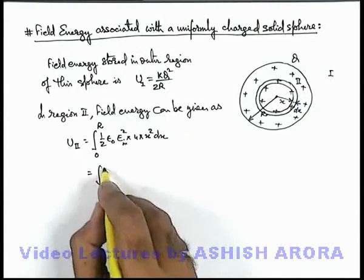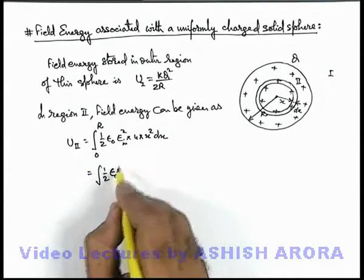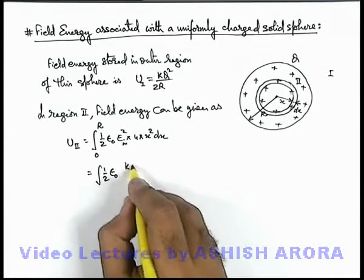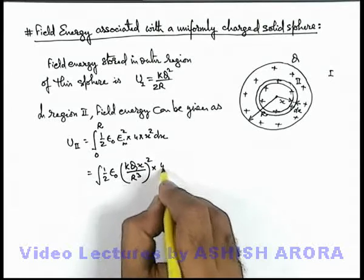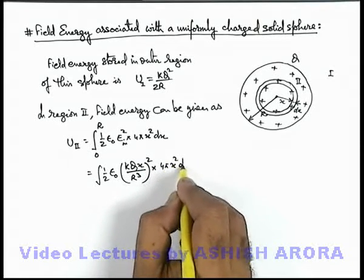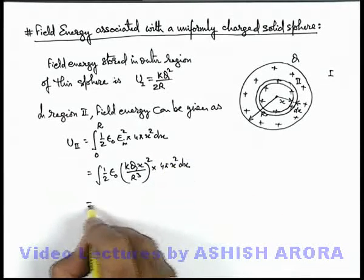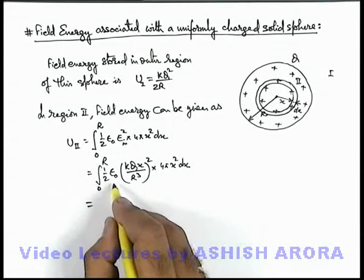If we substitute the values it will be ½ε₀, electric field can be written as kQx/R³, whole square multiplied by 4πx²dx. And in this situation further if we simplify this expression...